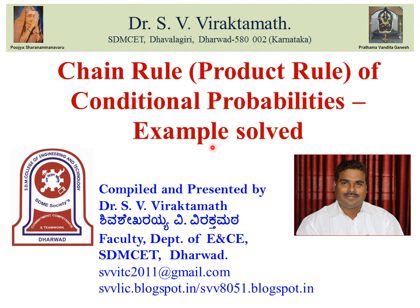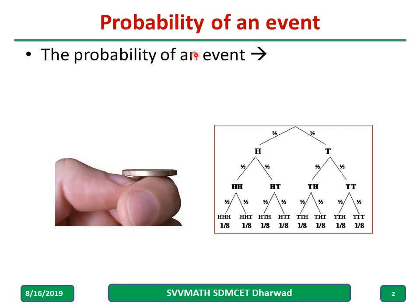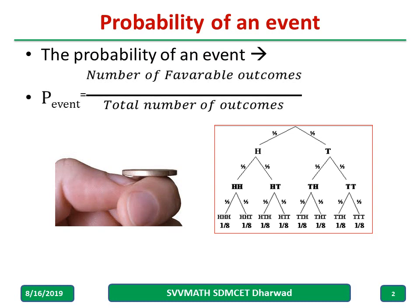One or two examples have been discussed in this video. The probability of an event is given by the number of favorable outcomes divided by the total number of outcomes. If I toss a coin, the probability of getting a head is half and the probability of getting a tail is half. Similarly, if I want head, head, then tail when I throw three times, the probability is given by one by eight.